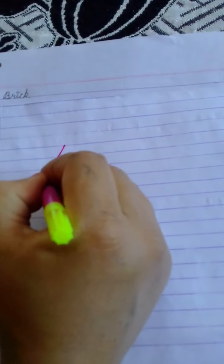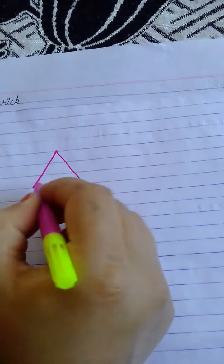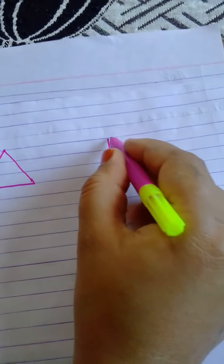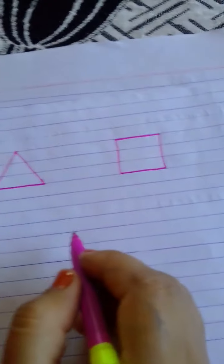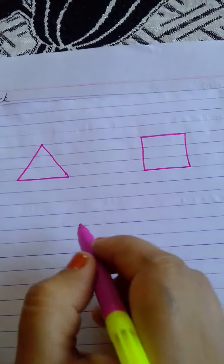Suppose I have given you a triangle and a square. And I tell you to form a pattern using these two shapes. How can you form children?